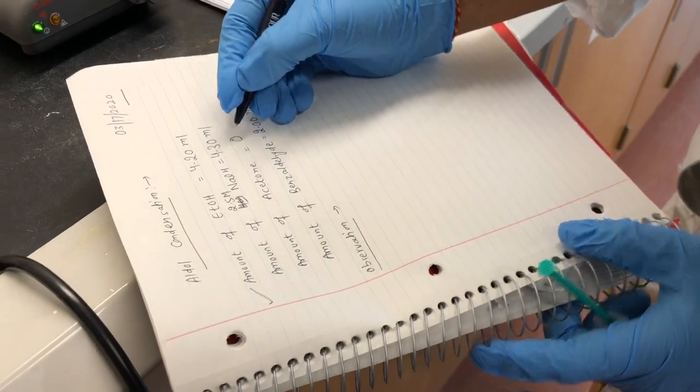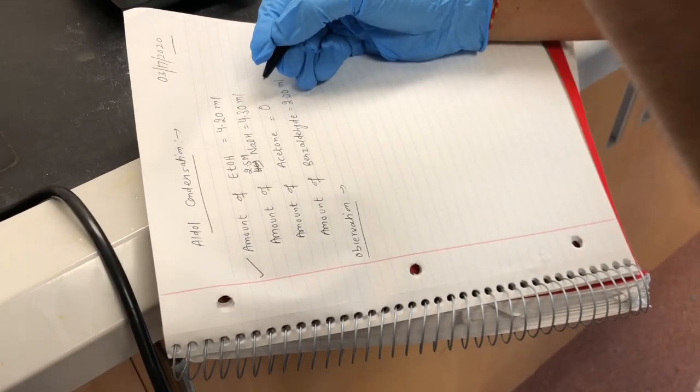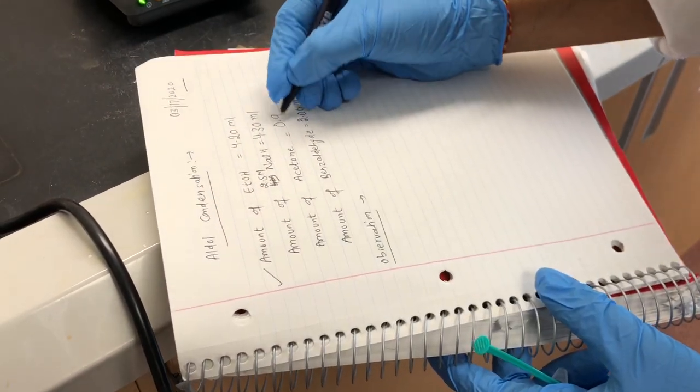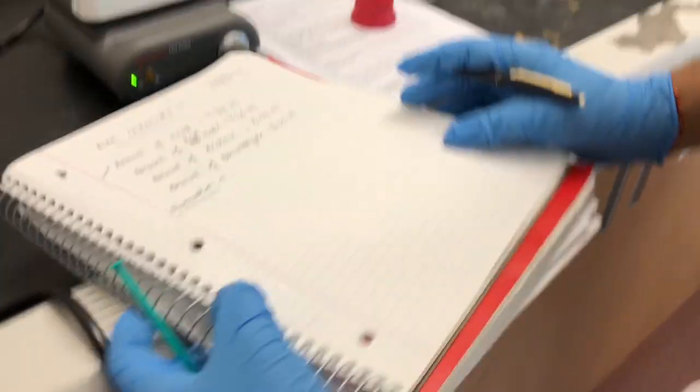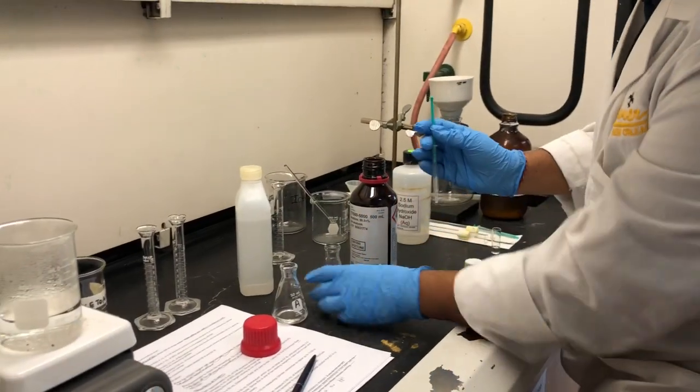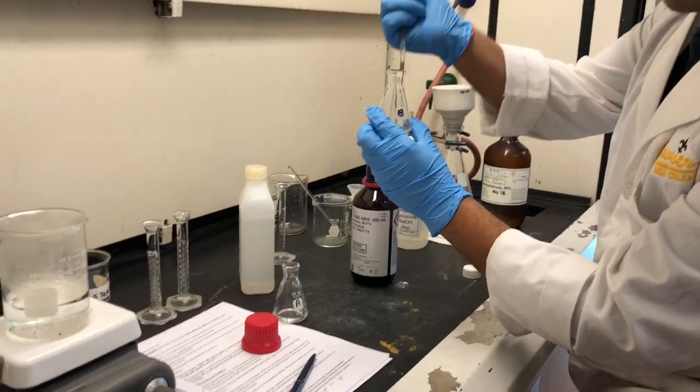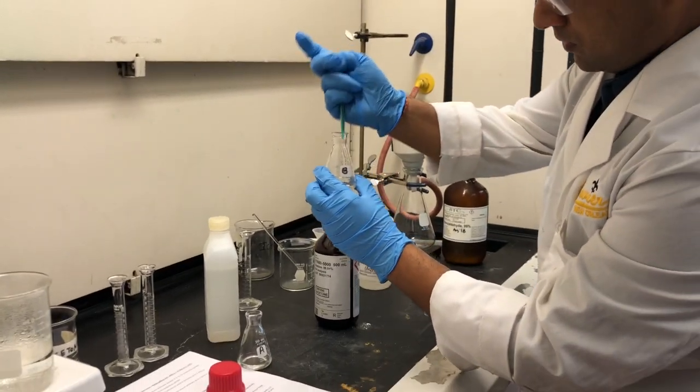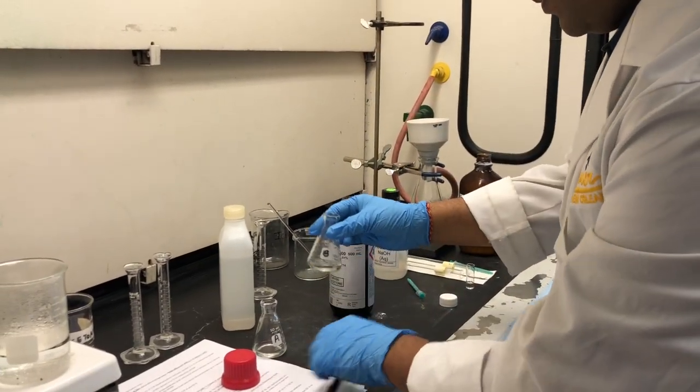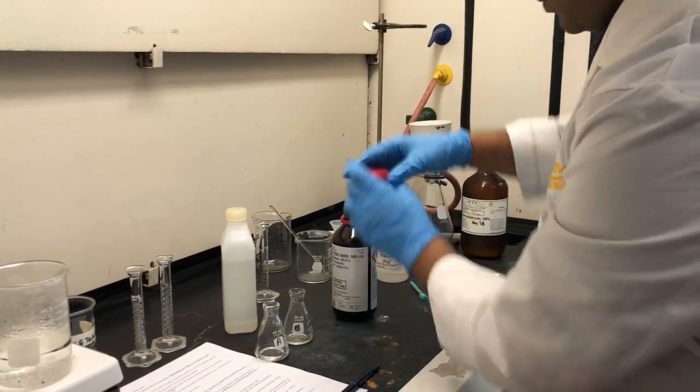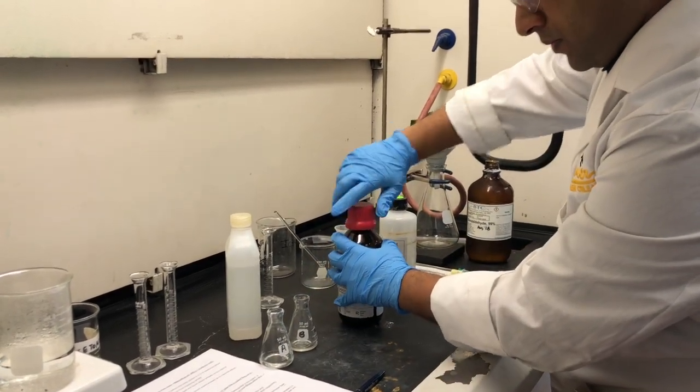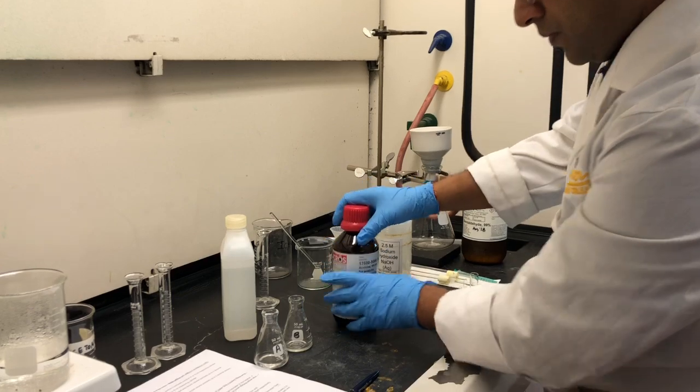And we will record the exact amount. So this time I have 0.95 ml. And I will transfer in aluminaire flask B. Now my flask B has benzaldehyde and acetone.